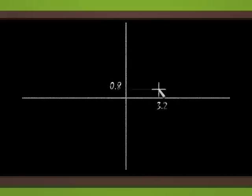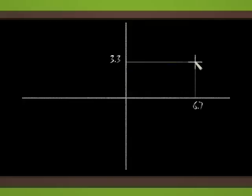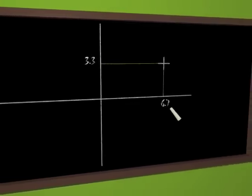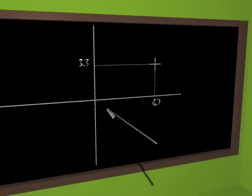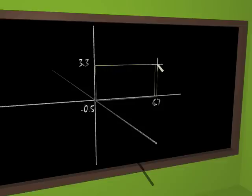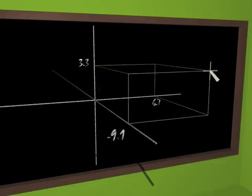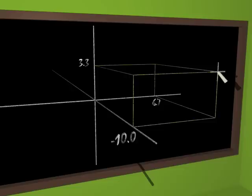If you had to explain to some being living on a line what it is to be a point in the plane that is unknown to him, you could simply say: a point in the plane is just a pair of numbers. Let's go to the third dimension. The chalk now writes in the air, and draws a third axis, perpendicular to the two previous ones. A point in space is described by three numbers: x, y and z. One could say to the reptiles that are curious to know about our world: a point in space is just three numbers.